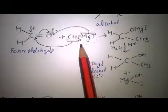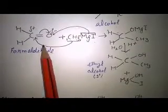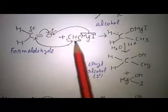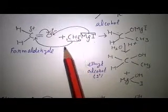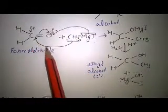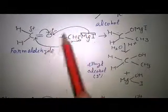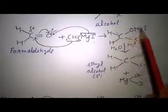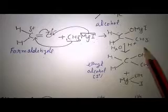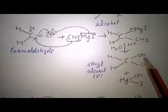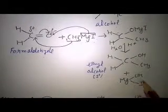Students, now we are doing the Grignard reagent reaction with formaldehyde. This is formaldehyde and the Grignard reagent is CH₃MgI. The methyl group attaches with the positively charged carbon since it is the negative part, and MgI attaches with the oxygen. When this further reacts with H+ ions, H+ attaches with the oxygen and MgI is released as Mg(OH)I.